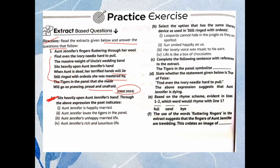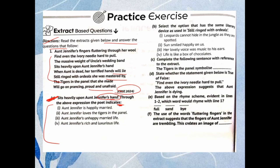First question, from the CBSE 2020 exam: through the expression 'sits heavily upon Aunt Jennifer's hand,' the poet indicates — (a) Aunt Jennifer is happily married, (b) Aunt Jennifer loves the tigers and the panel, (c) Aunt Jennifer's unhappy married life, (d) Aunt Jennifer's rich and luxurious life. The correct answer is option (c), Aunt Jennifer's unhappy married life. She was burdened by the massive weight of uncle's wedding band, indicating she was not happy in her marriage.